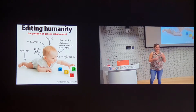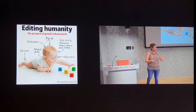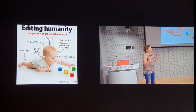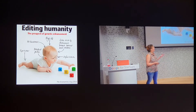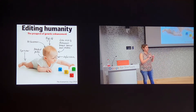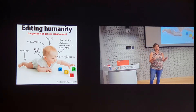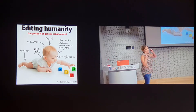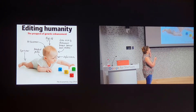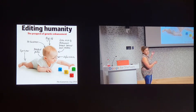Ever since humans discovered that genes are responsible for how we function, how we act, how we look, what we do — the goal or the dream was to alter or edit genes in order to create the perfect human being. We could design a baby with perfect speech, not be bald, have high IQ, low risk of all diseases, 20-20 vision, and be a sprinter.